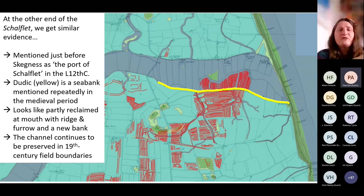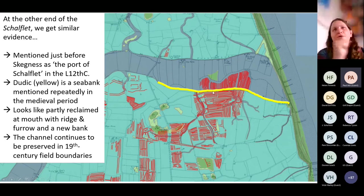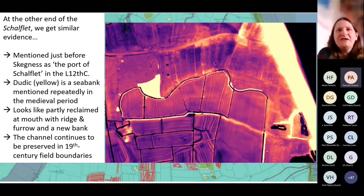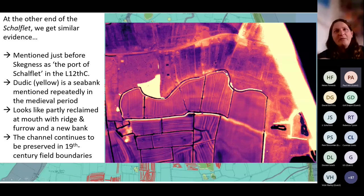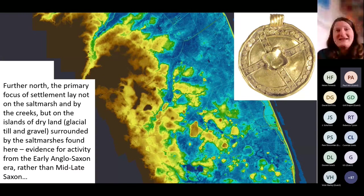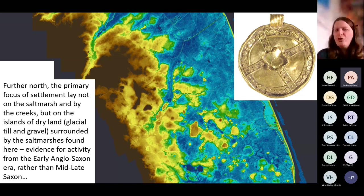The channel itself is preserved in the modern field boundaries. What's particularly interesting is we have what looks like medieval ridge and furrow laid out over part of the channel mouth — probably late medieval reclamation of the channel mouth as it finally ceases to be a significant marine area. If you zoom in on the LIDAR, it looks like there was probably a secondary bank and then medieval ridge and furrow laid out over part of the mouth there. We have really interesting evidence for a remarkable amount of marine input quite late in the medieval period in the southern area around Skegness.